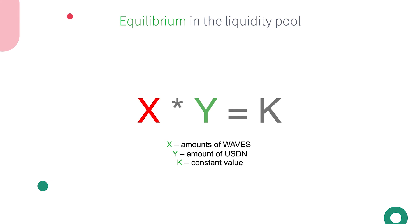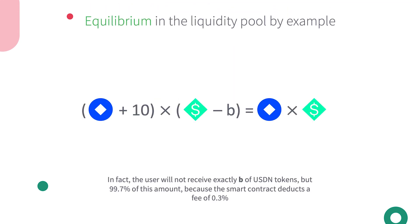How does a swap actually occur? Let's look at what happens in our Waves/USDN pool. If we send 10 Waves tokens to the pool, the smart contract calculates how many USDN tokens we should receive — corresponding to b below — in order to maintain the following equation: (Waves in pool + 10) × (USDN in pool − b) = Waves in pool × USDN in pool. In fact, the user will not receive exactly b of USDN tokens, but 99.7% of this amount, because the smart contract deducts a fee of 0.3%.